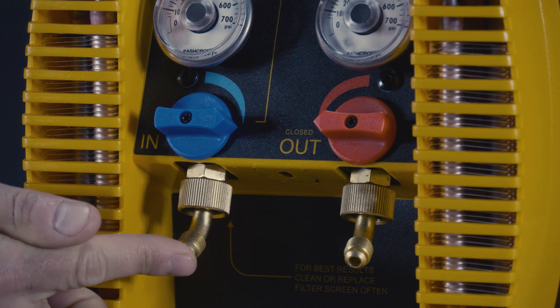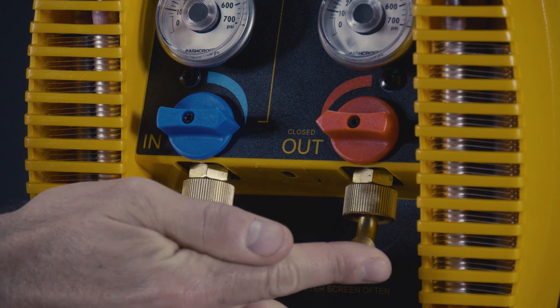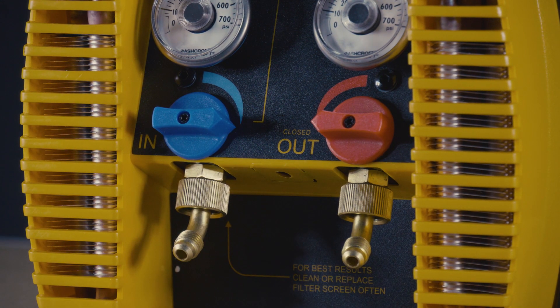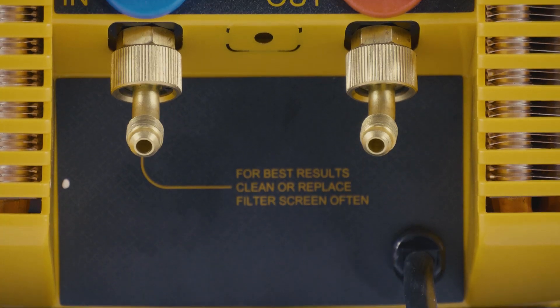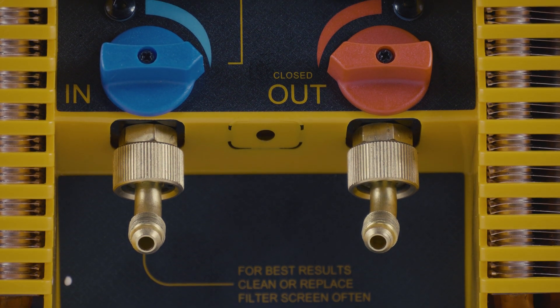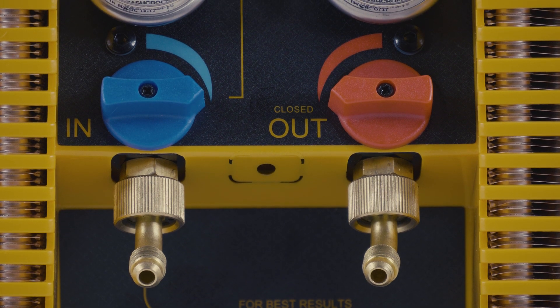While you're checking the holding pressure, press your fingers against both ports for a few seconds and then release. There should be no pressure exiting from these ports when the valves are closed. If you can feel any pressure, it could indicate a leak at the ball valve seals.